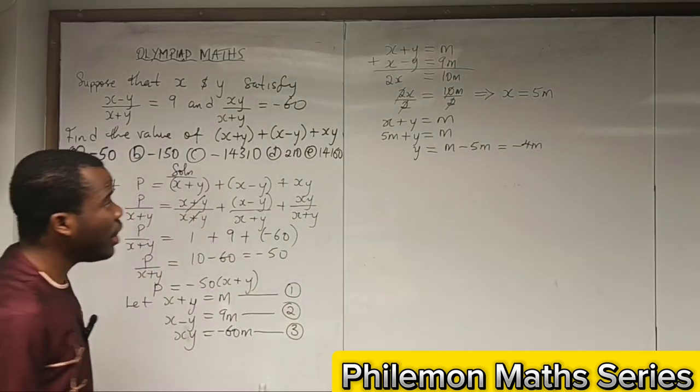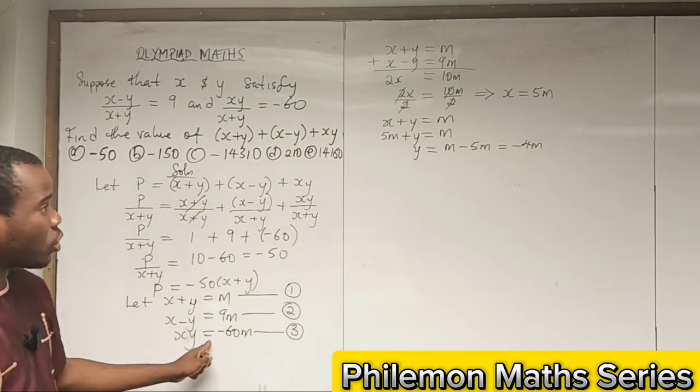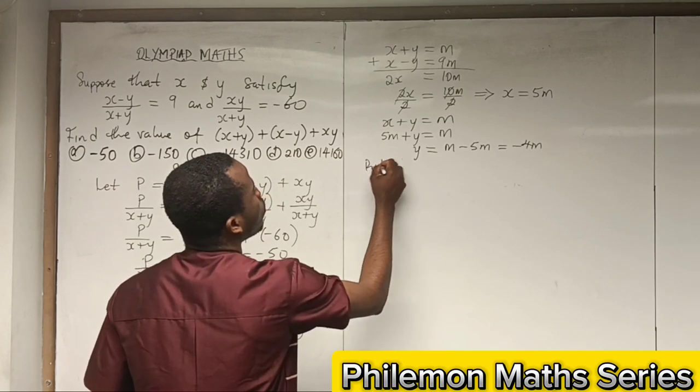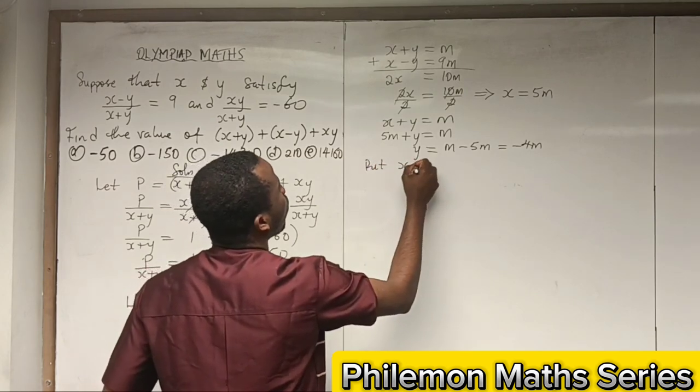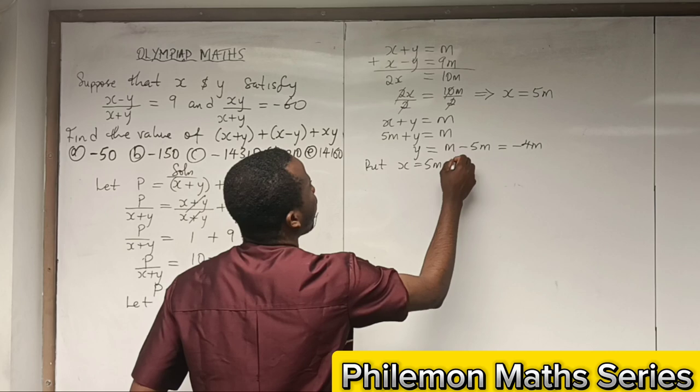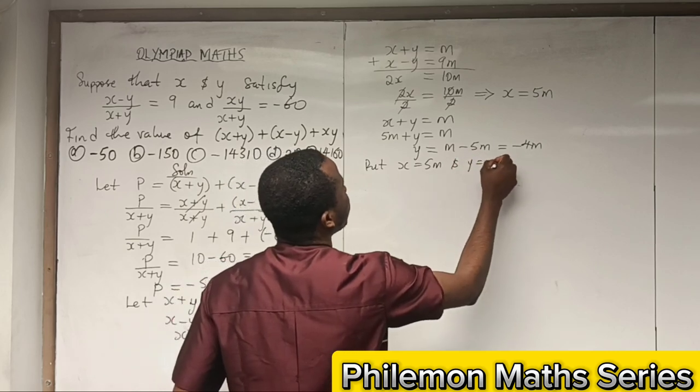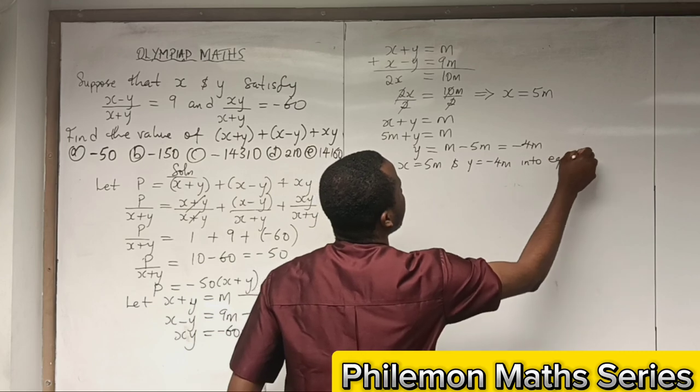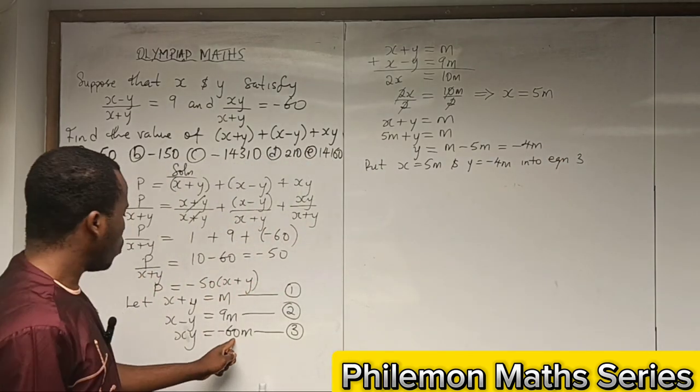Now let's substitute x and y into equation 3. Put x = 5m and y = -4m into equation 3.